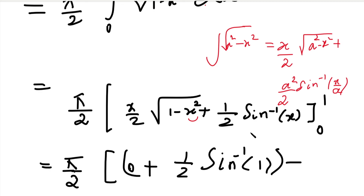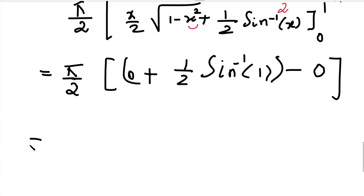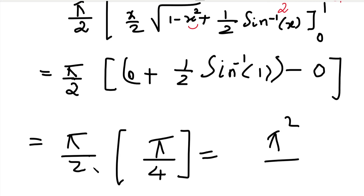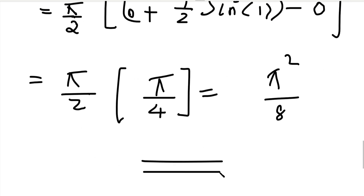Applying the lower limit x equals 0: the first term is 0, and sin inverse 0 equals 0. So the result is pi by 2 times [0 plus 1 by 2 times pi by 2 minus 0] equals pi by 2 times pi by 4, which equals pi square divided by 8. Therefore, the value of the triple integration is pi square divided by 8.